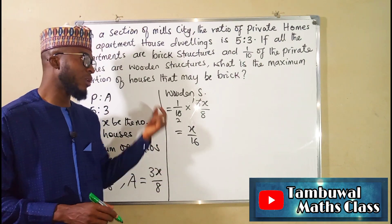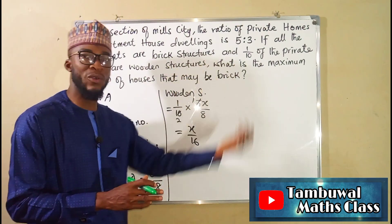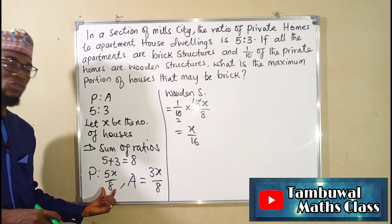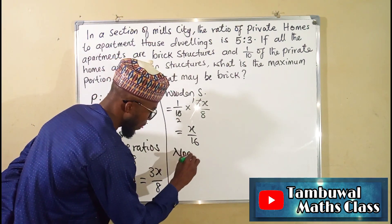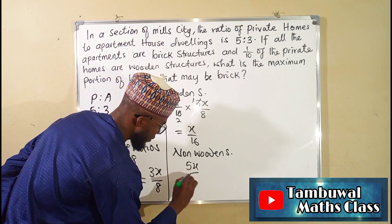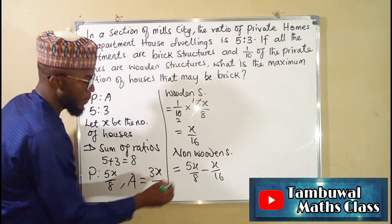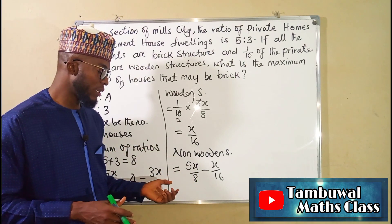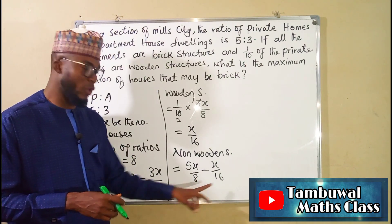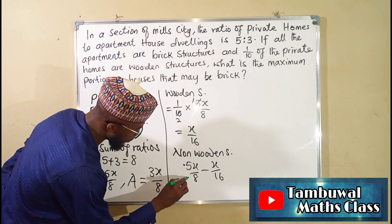So X over sixteen is the total number of wooden structures among the private homes. Now we need to find the portion that are not wooden structures. To find them, we subtract the wooden portion from the total number of private homes: five X over eight minus X over sixteen. To simplify, we change the denominators to be the same — multiplying eight by two gives sixteen, so we also multiply the numerator by two.